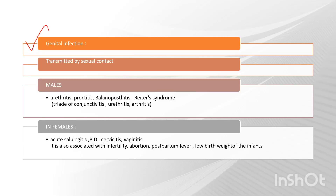Genital tract infection pathogenicity is transmitted by sexual contact. In males, the most common manifestations are urethritis, proctitis, balanitis, and Reiter's syndrome, whose triad includes conjunctivitis and reactive arthritis. In females, acute cervicitis and vaginitis can be associated with abortions, postpartum fever, and low birth weight of infants.